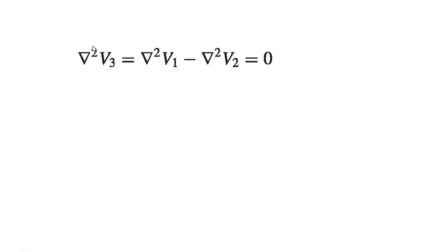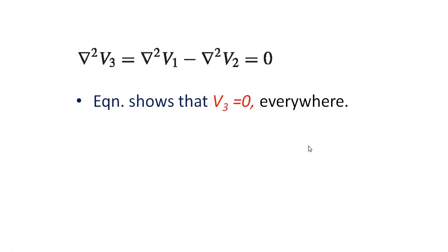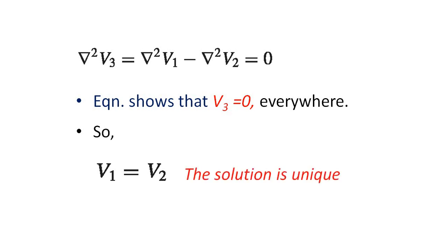That is, del squared V3 equal to 0. This equation shows that V3 equal to 0 everywhere. So V1 must be equal to V2 — that means the solution is unique.